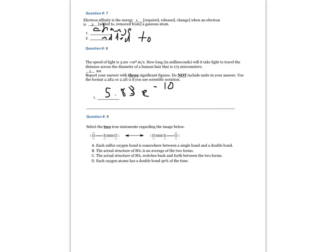Question number nine: Select the two true statements regarding the image below. The answers are A, heat-sulfur-oxygen bond is somewhere between a single bond and a double bond, and answer B, the actual structure of SO2 is an average of the two forms.